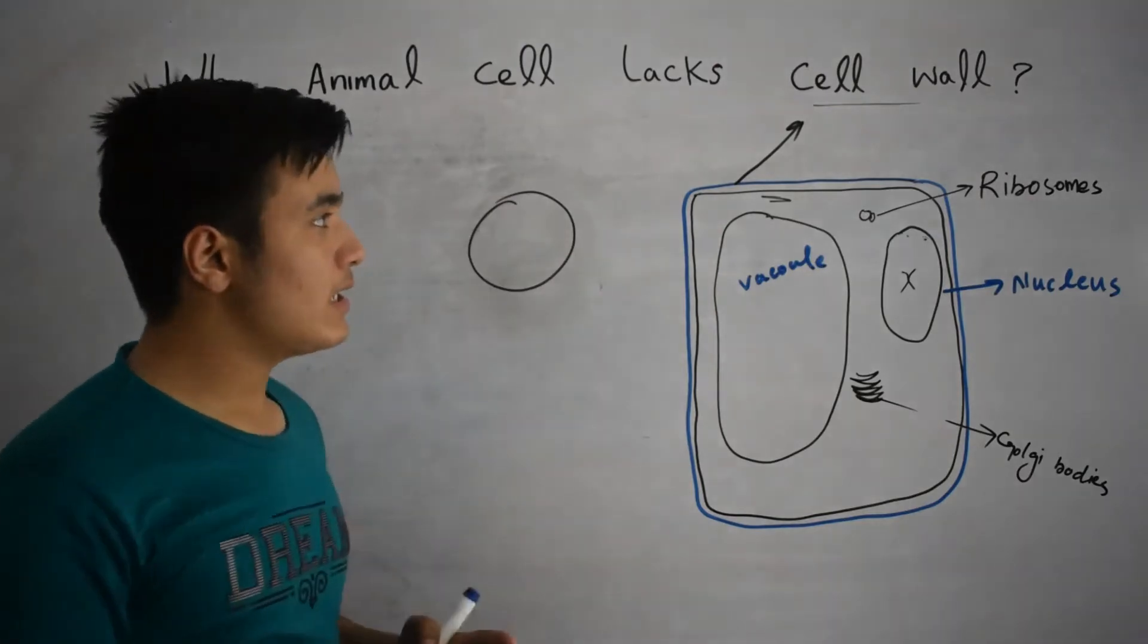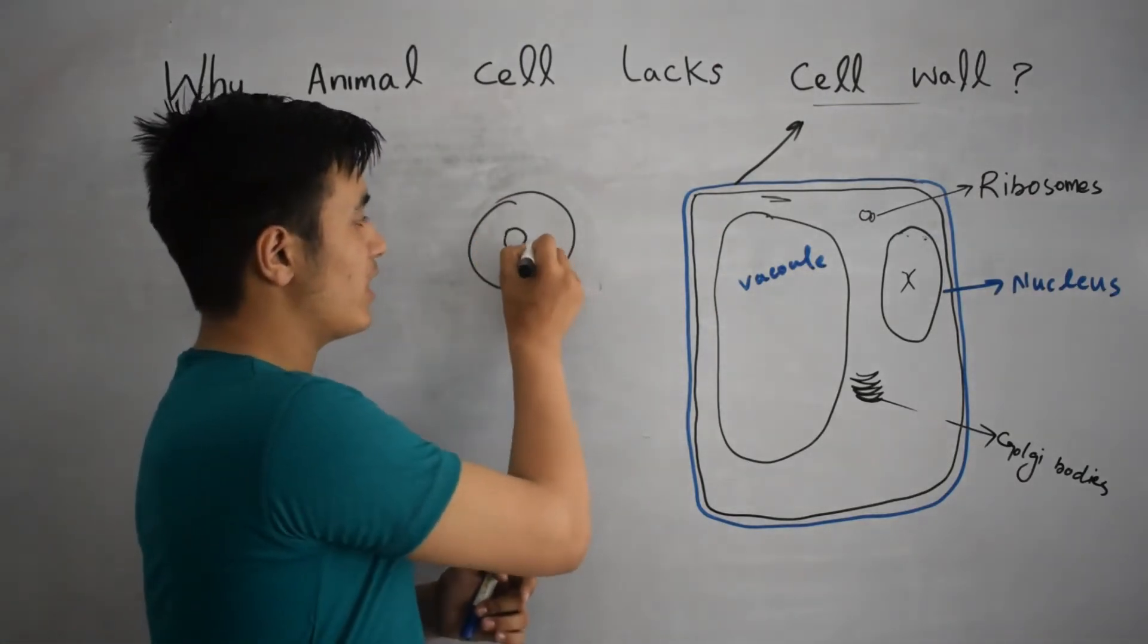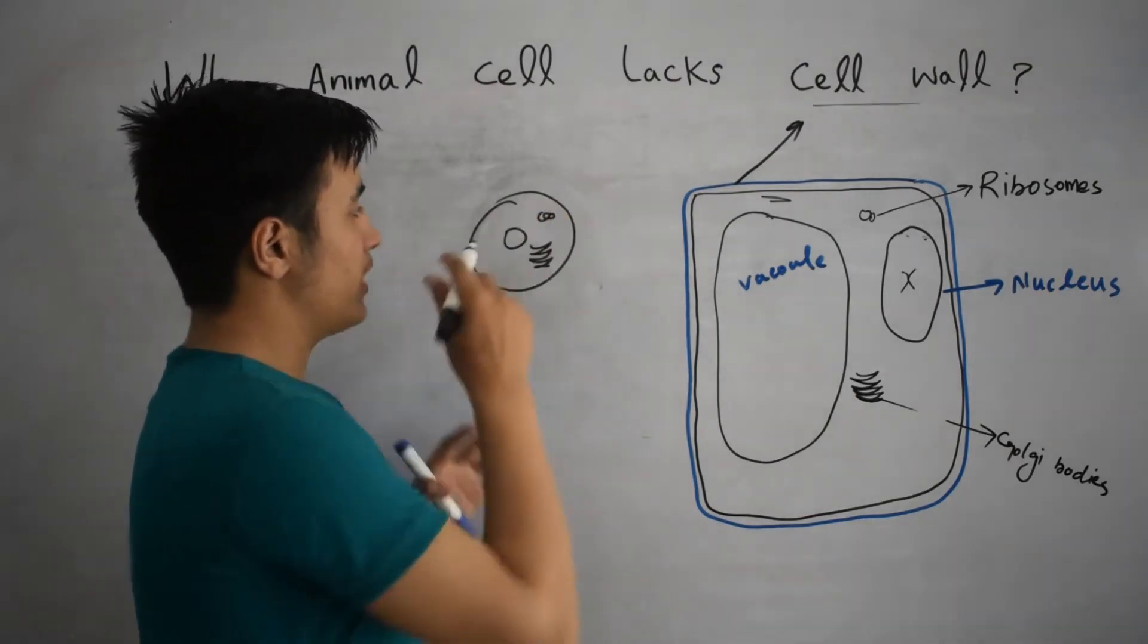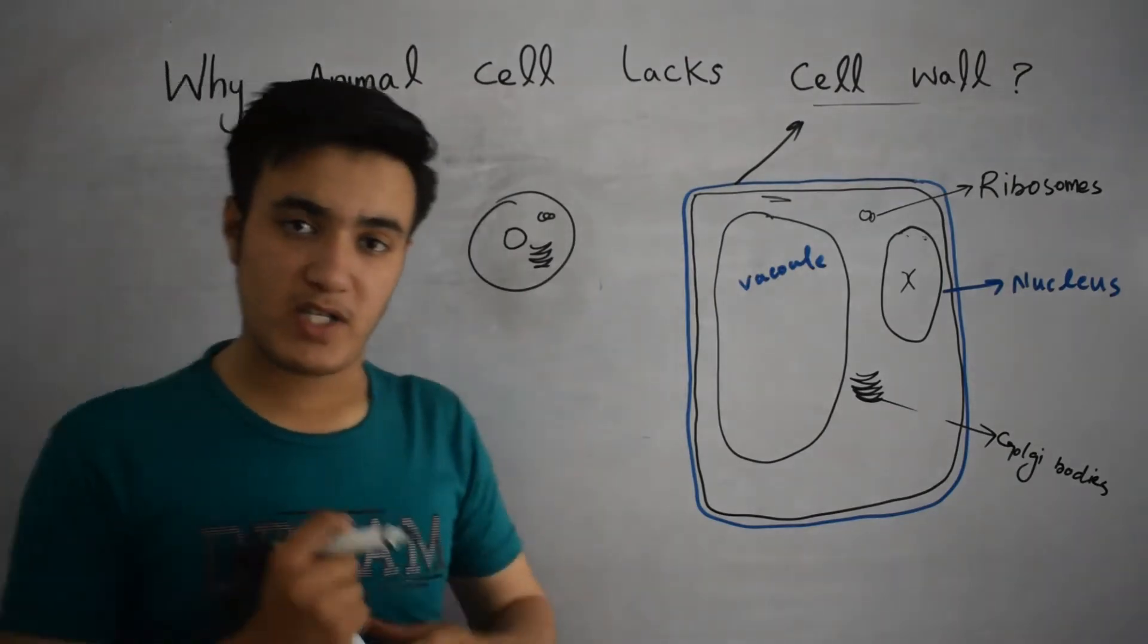While in animal cell, the cell wall is absent. Here the nucleus is present, the Golgi apparatus is present, the ribosome is present, etc. While the cell wall is absent.